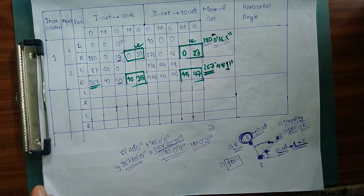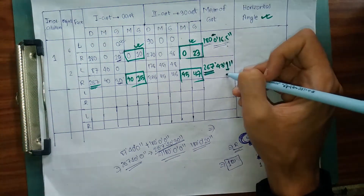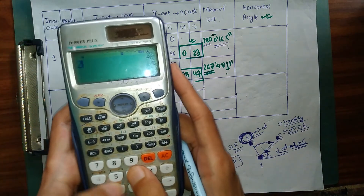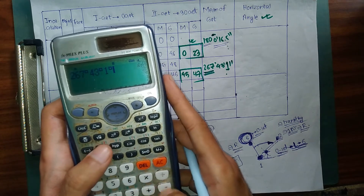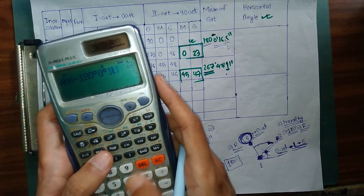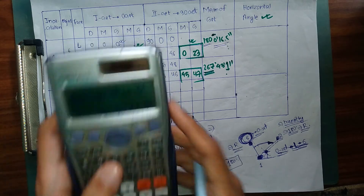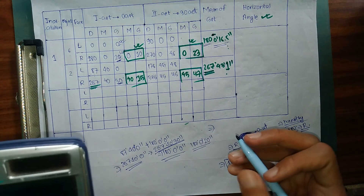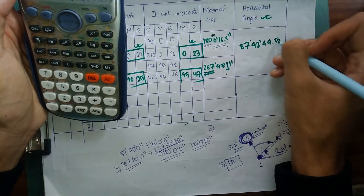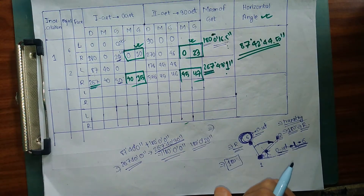The horizontal angle is simply the difference of both mean offset values. Horizontal angle equals 267°43'1" minus 180°0'16.5", which gives 87 degrees 42 minutes 44.5 seconds. In this way you can get your required horizontal angle and apply correction.